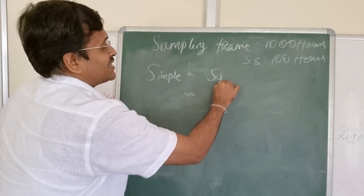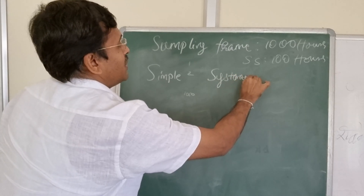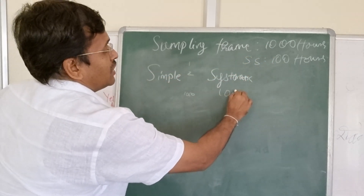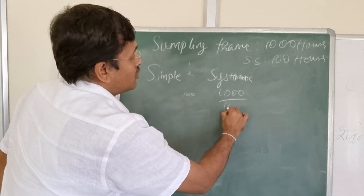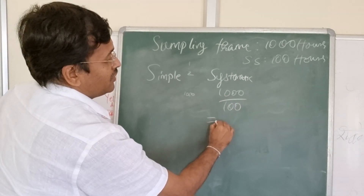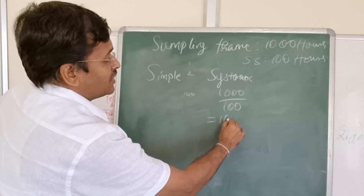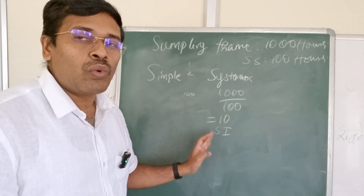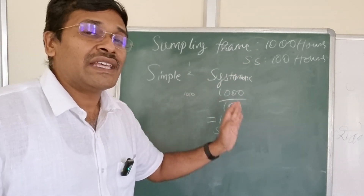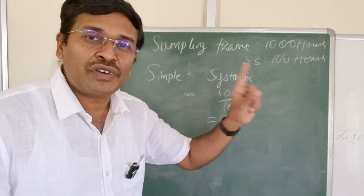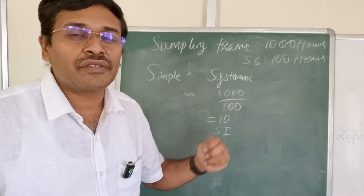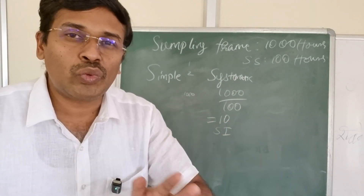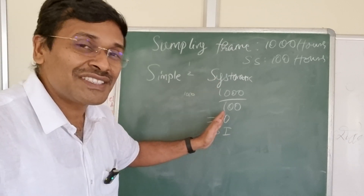The second one is systematic random sampling. In systematic random sampling, the sampling frame is 1000 and the number of samples we need is 100. So we take 1000 divided by 100, and we get the number 10. This number 10 is called the sampling interval. Using this sampling interval, we take every 10th house — for example, we take house 1, then 11, then 21, then 31, and so on at intervals of 10. That is systematic random sampling.